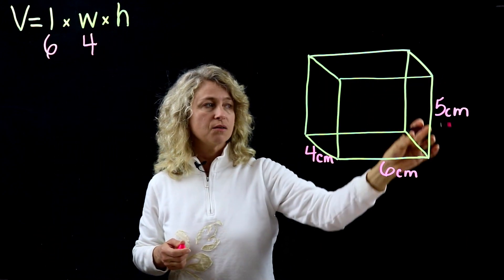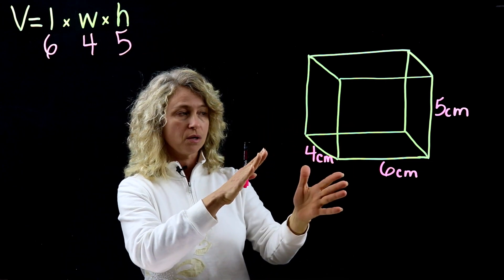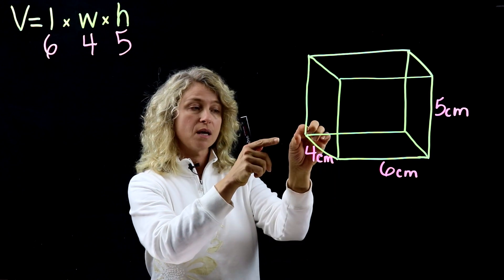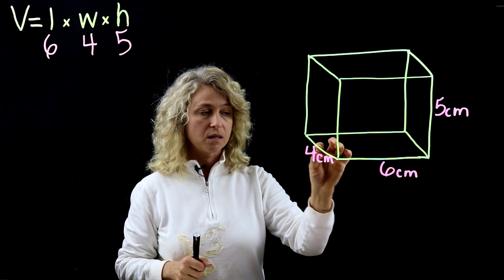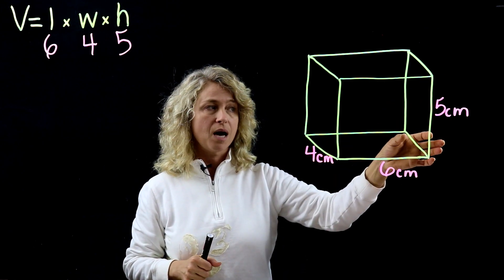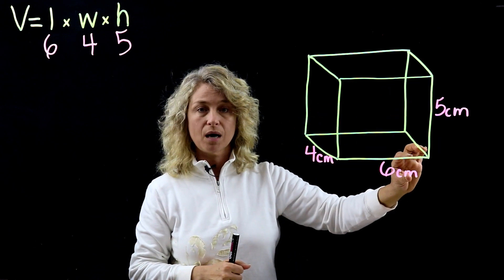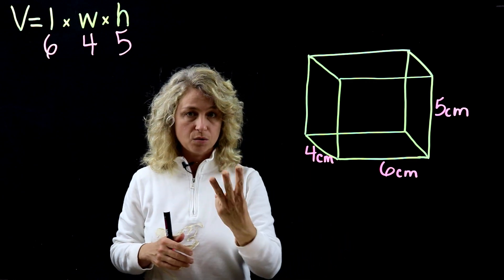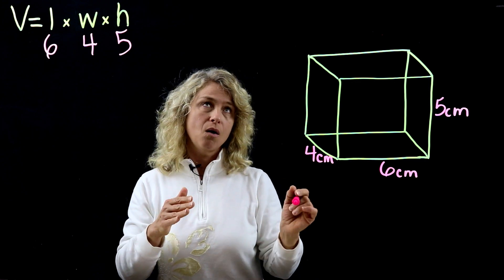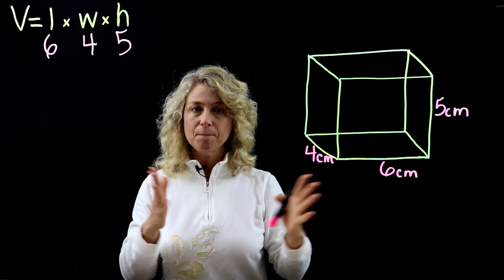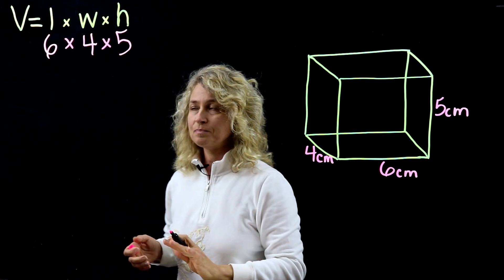Now let's fill in some values: length is 6, width is 4, and height is 5. Depending on which way the box is turned, you might interpret the dimensions differently. If the box is rotated, you could call a different side the length or the width. It really doesn't matter as long as you have three dimensions and multiply them together — don't get hung up on which is length or width, just fill in the values.